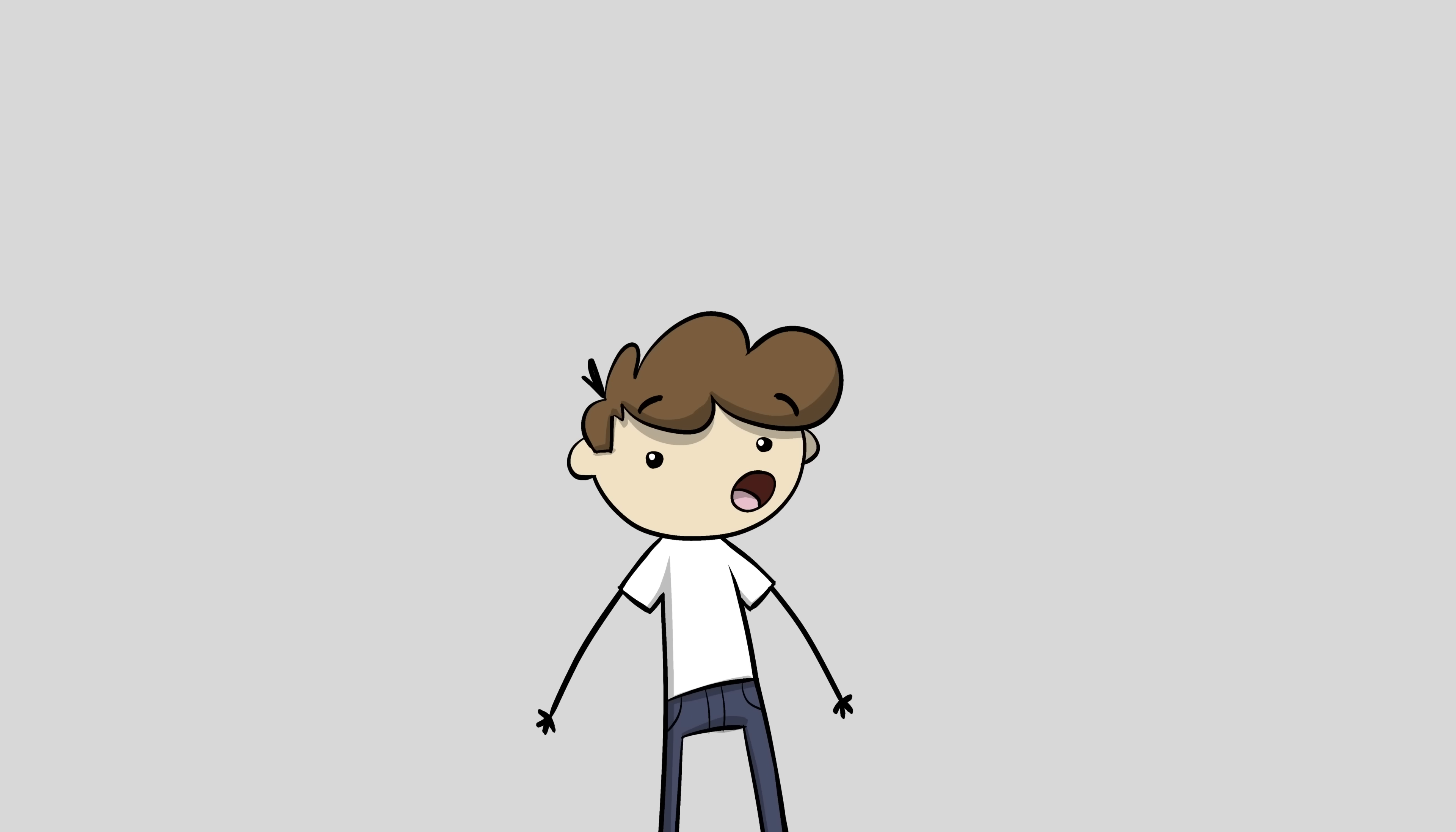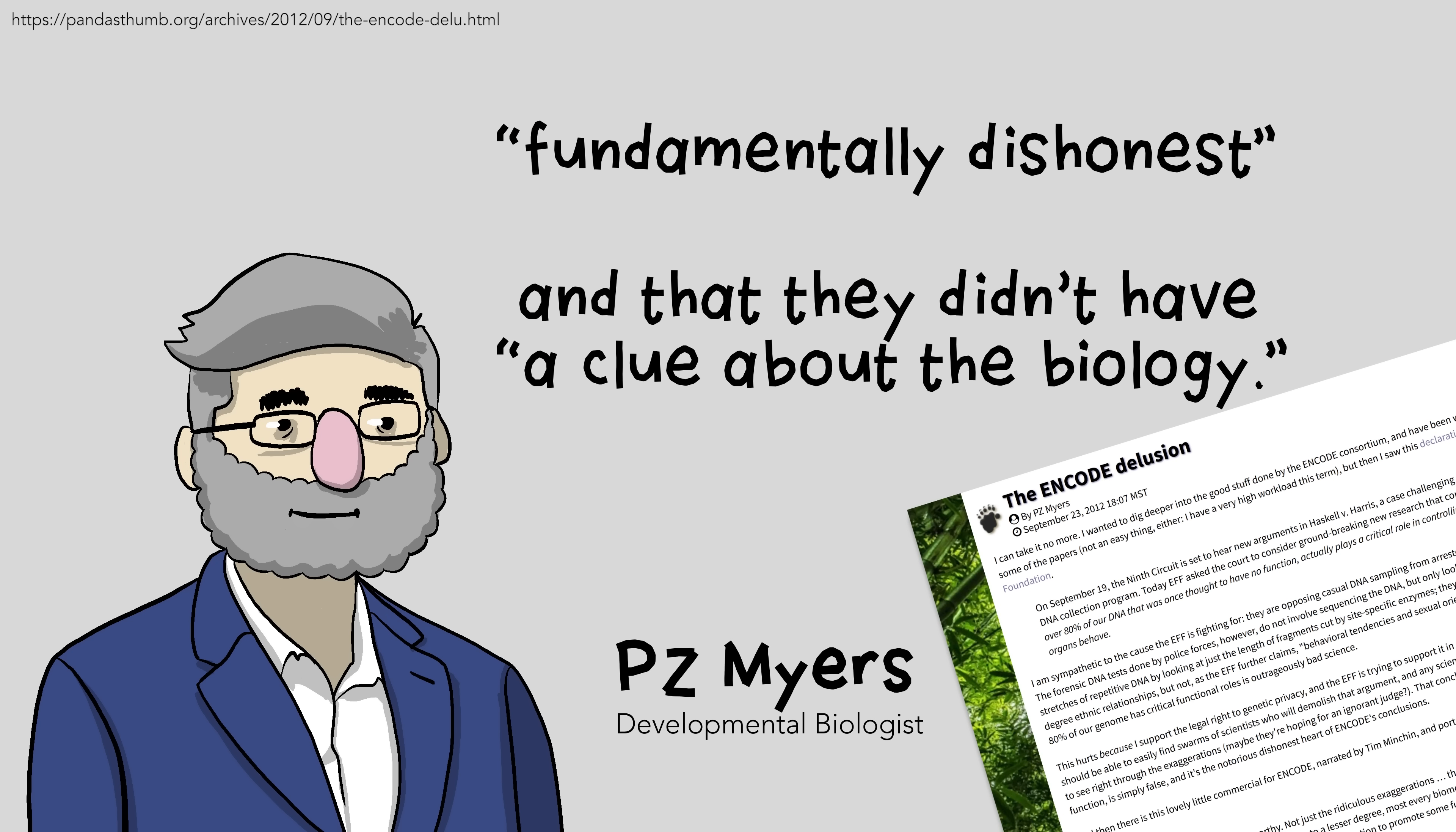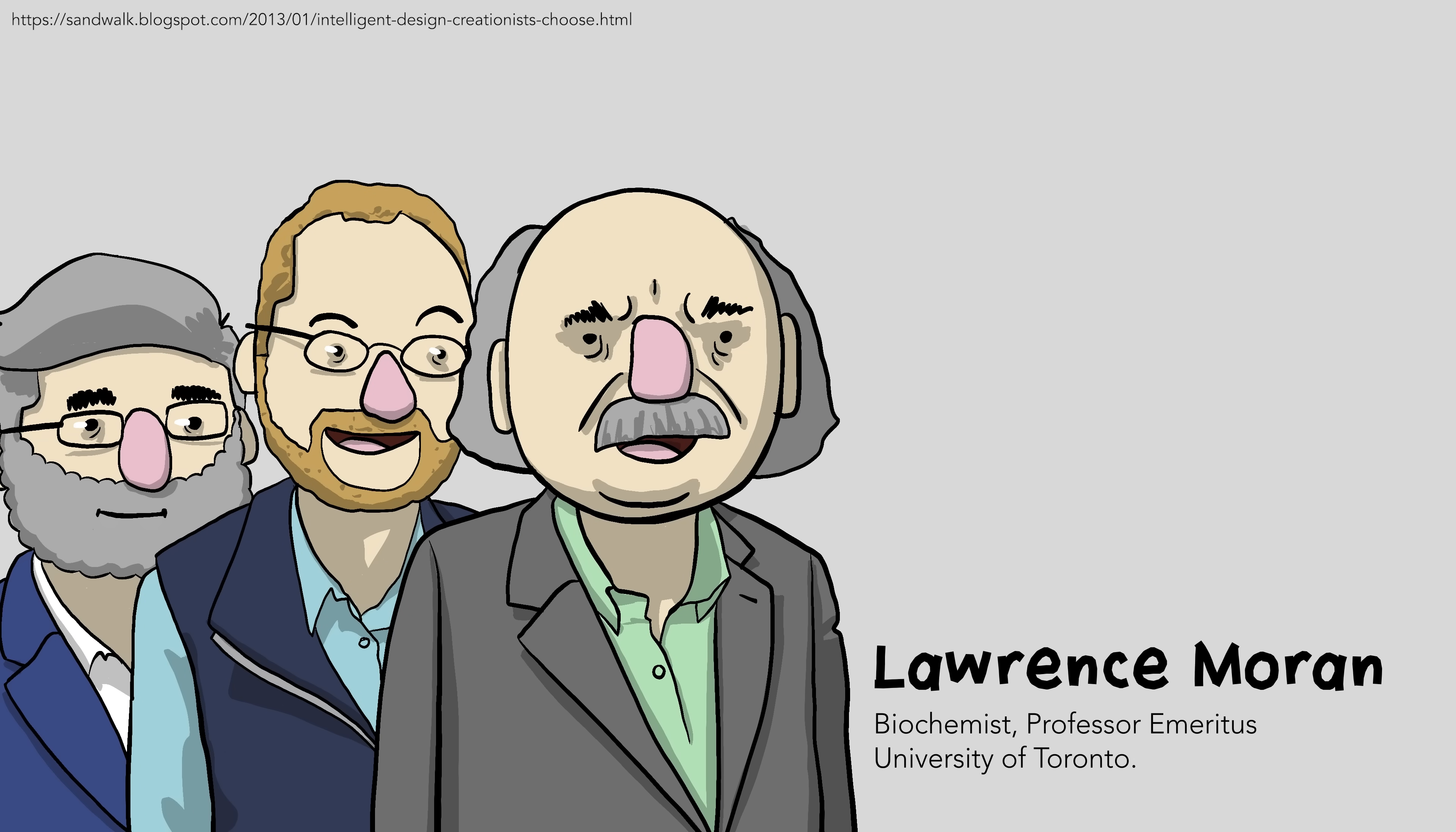Many people have not been happy about ENCODE's findings. Developmental biologist PZ Myers claimed the ENCODE researchers are fundamentally dishonest, that they didn't have a clue about biology. Bioinformatician Nick Matsky claimed that ENCODE researchers lacked broad training in basic comparative biology. In other words, evolution. Biochemist Lawrence Moran flatly called the ENCODE scientists stupid.